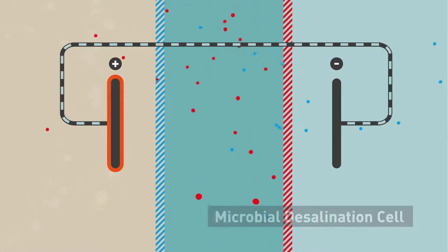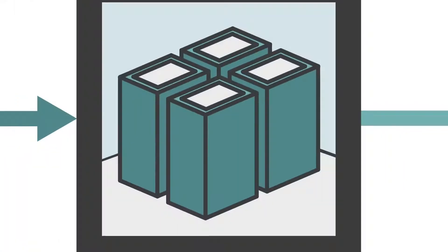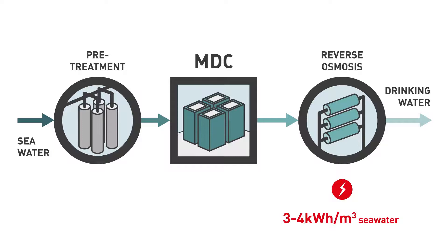The new configuration is called a microbial desalination cell or MDC. The MDC will lower the salinity of the seawater to a brackish water level, which will then be completely desalinated in the RO with far lower energy consumption.